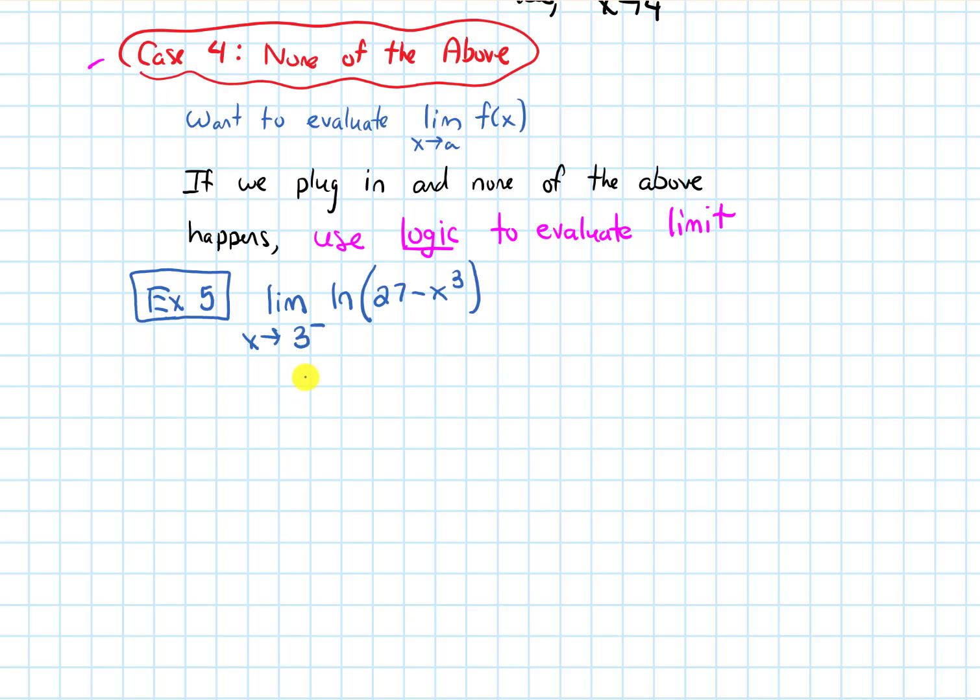So my first step is always try to plug in. If we plug in, we will get ln of 27 minus, and let's not even worry about the fact that it's a one-sided limit right now. Let's just straight up plug in the number. That should still be our first step. And if I plug in 3, we'll get 27. That's what 3 cubed is going to be, which gives us ln of 0.